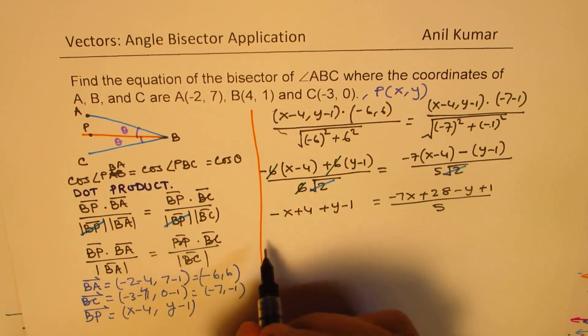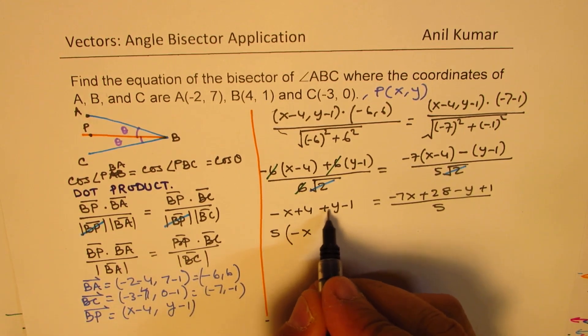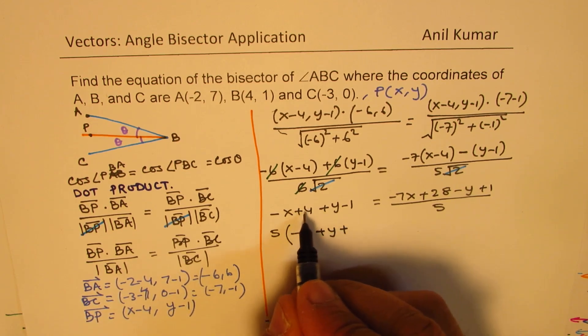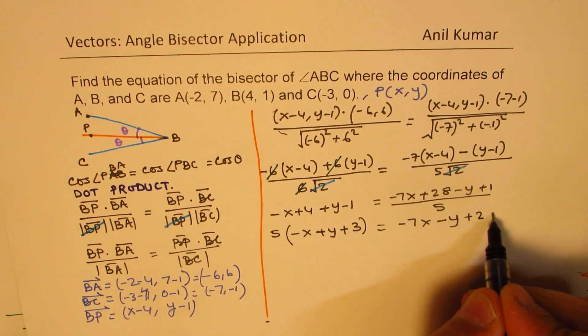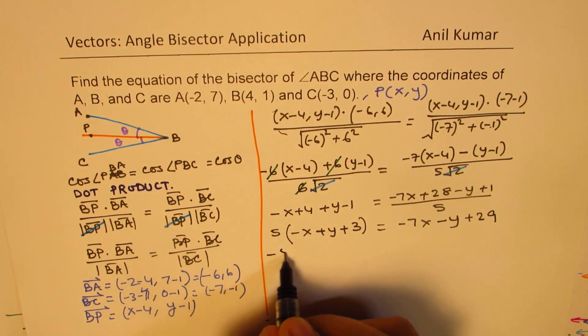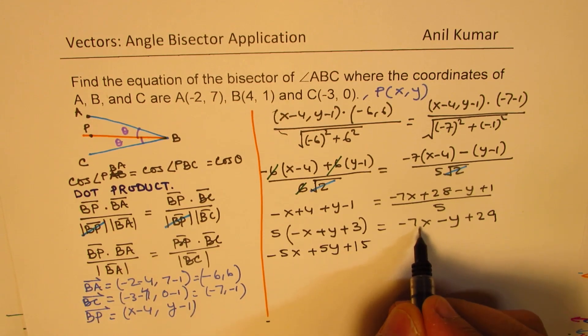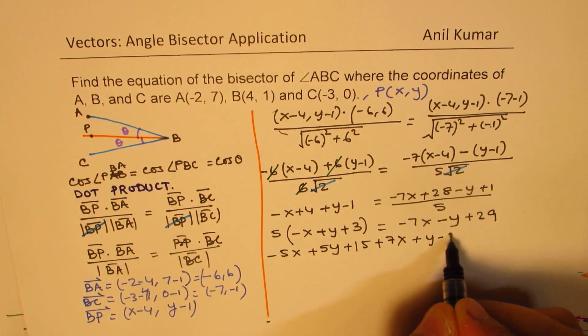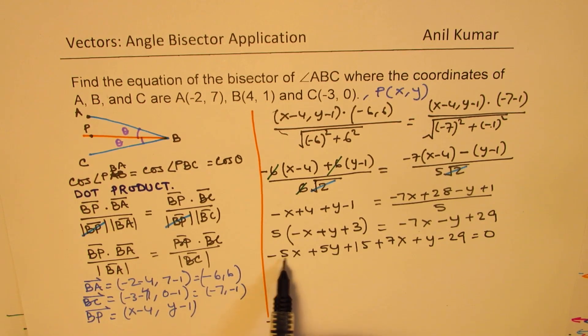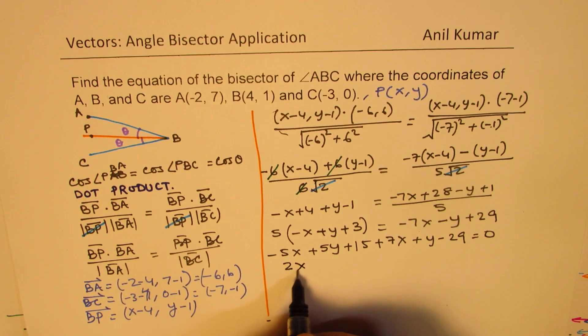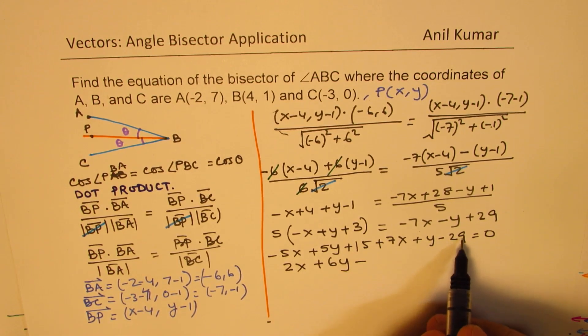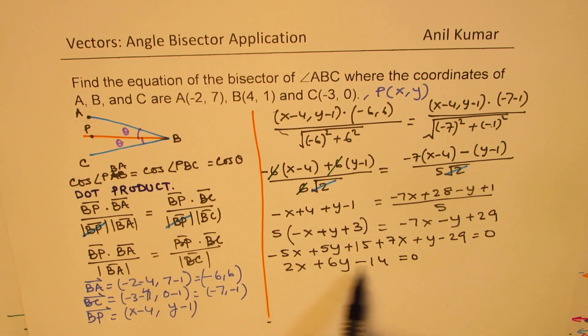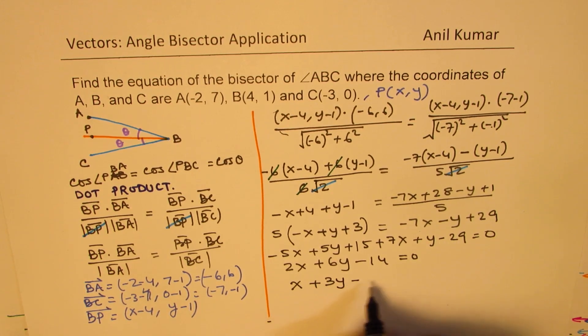Divided by 5. So, we'll cross-multiply, so we get 5 times, we have -x + y - 1, when you take away, it's + 3, equals 2, -7x - y + 29. Now, let's bring them together, we have -5x + 5y + 15, bringing this + 7x + y - 29 equals to 0. Now, -5x + 7x gives 2x, plus 5y and y will give you 6y, and the constant, 29 is negative, plus 15, will be minus of, so 4 and 14 equals to 0. Well, we can divide everything by 2, so we get x + 3y - 7 = 0.